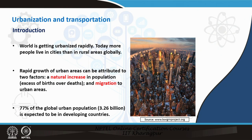Statistics show that 77 percent of the global urban population is expected to be in developing countries. India, being one of the developing nations in the world, is one such nation where you see a higher percentage of people living in urban areas.